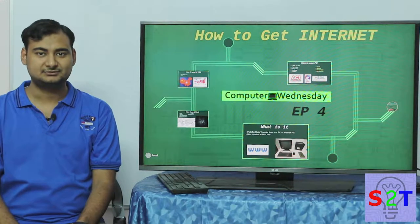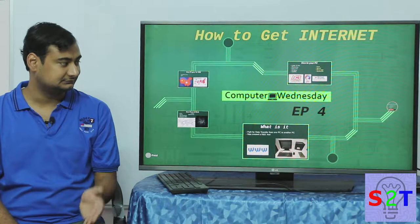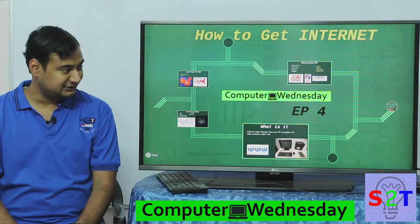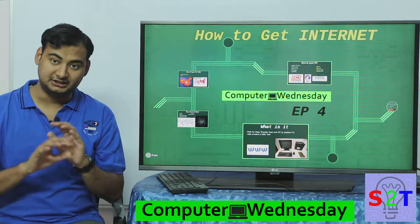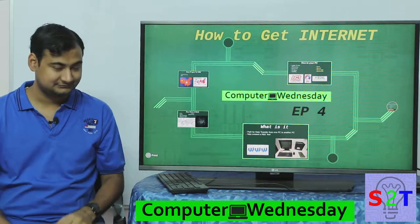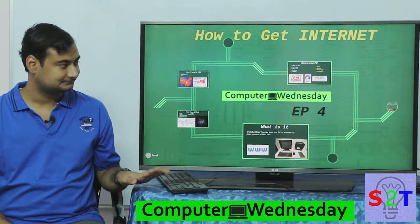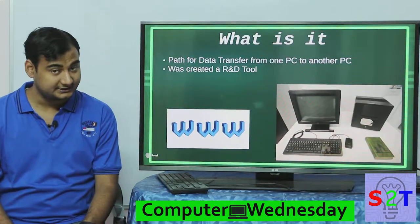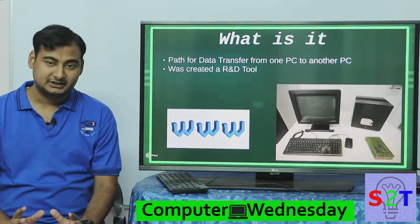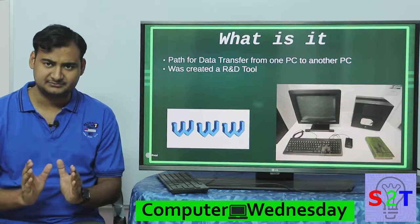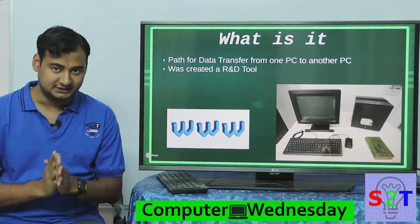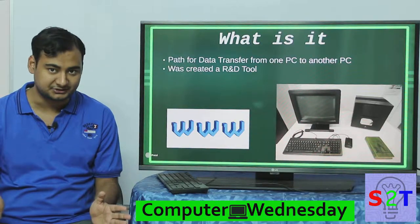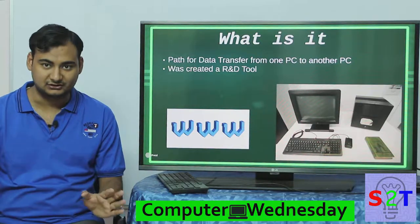Welcome to Camera Wednesday, episode number four. We're going to take a look at the internet. In the simplest sense, it's a very simple thing — it allows you to transfer data from one PC to another PC anywhere in the network. That's all it is.